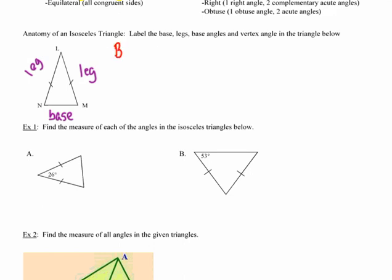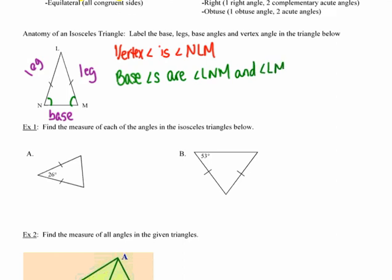So in this case, our vertex angle is going to be angle NLM. Our base angles are going to be the two angles that are adjacent to the base. So base angles are angles LNM and angle LMN.